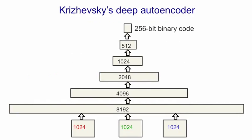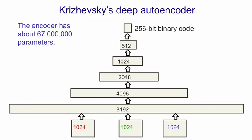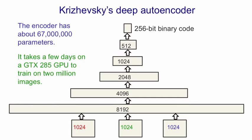So here's a net that was trained by Alex Krzyzewski. It's working on small color images, so they're only 32 pixels by 32 pixels. And it takes as input the red, green and blue channels from those images, so there are 3000 inputs. It then expands that to a larger number of hidden units, because we're going to go from real valued inputs to logistic hidden units, which probably have less capacity. We then progressively decrease the number of units in each layer until we get down to 256 bits.